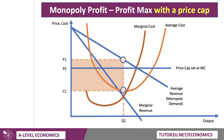It's a really good revision resource. This diagram video just takes you through what happens. If you put the price cap at P2, that means the firm can't charge P1 anymore, so they'll charge P2. That means there's an expansion down the demand curve because the product is a little cheaper, so output will expand from Q1 to Q2.